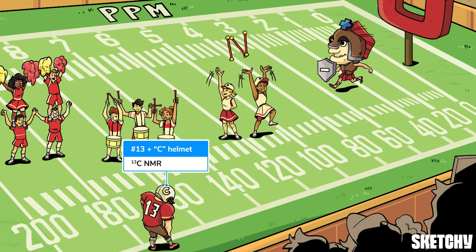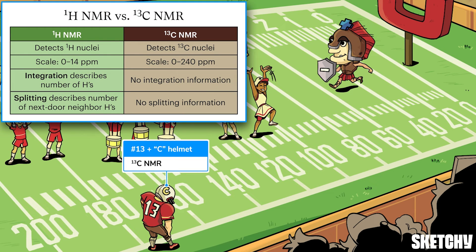He's sporting unlucky number 13 because carbon NMR uses carbon-13 isotopes, and this ill-fated footballer is all by his lonesome to represent that the peaks in carbon NMR are all singlets — there's no splitting.